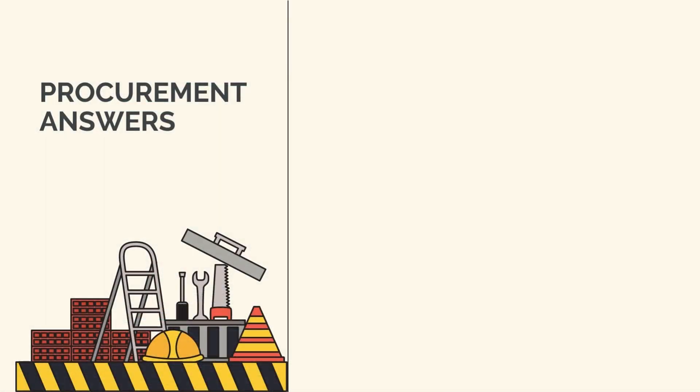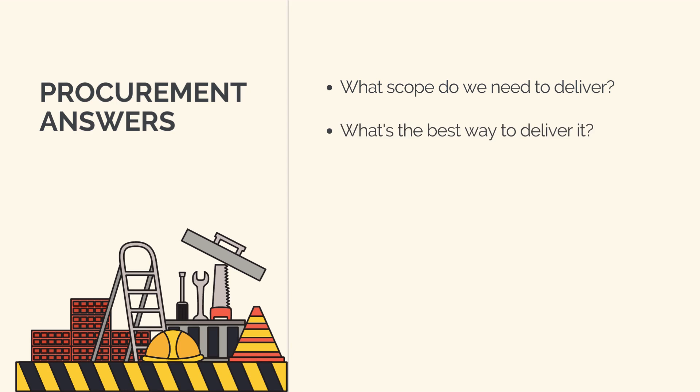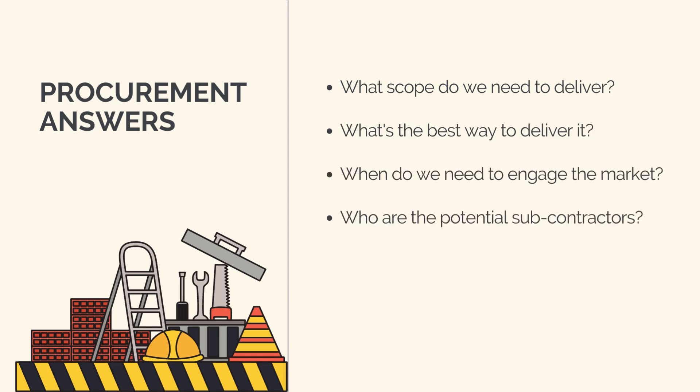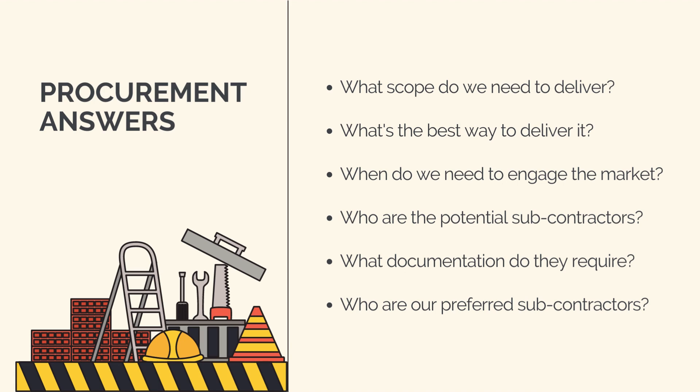Through the procurement process, we answer the following questions: What scope do we need to deliver? What's the best way to deliver it? When do we need to engage the market and run tenders? Who are the potential subcontractors and suppliers we can use to deliver the works? What information do they require to accurately provide us a quote? And once they've provided their quote and delivery methodology, who are our preferred subcontractors and suppliers?